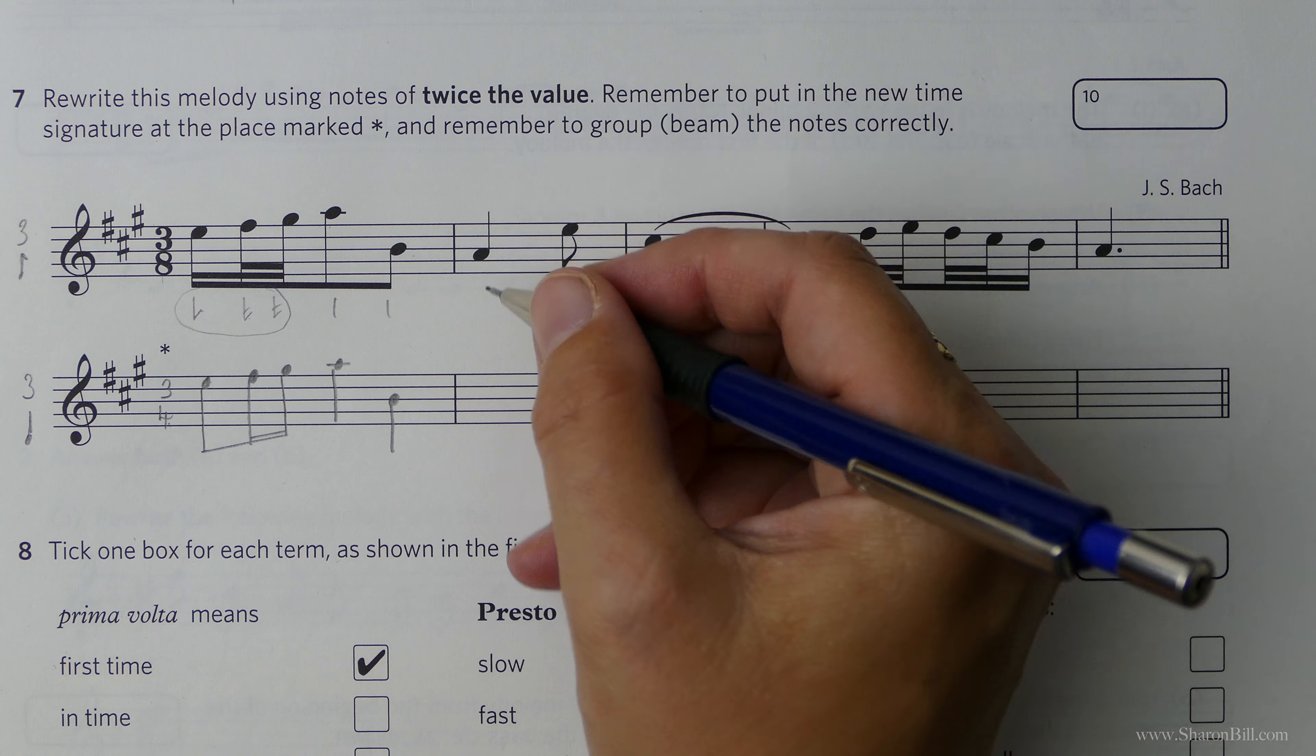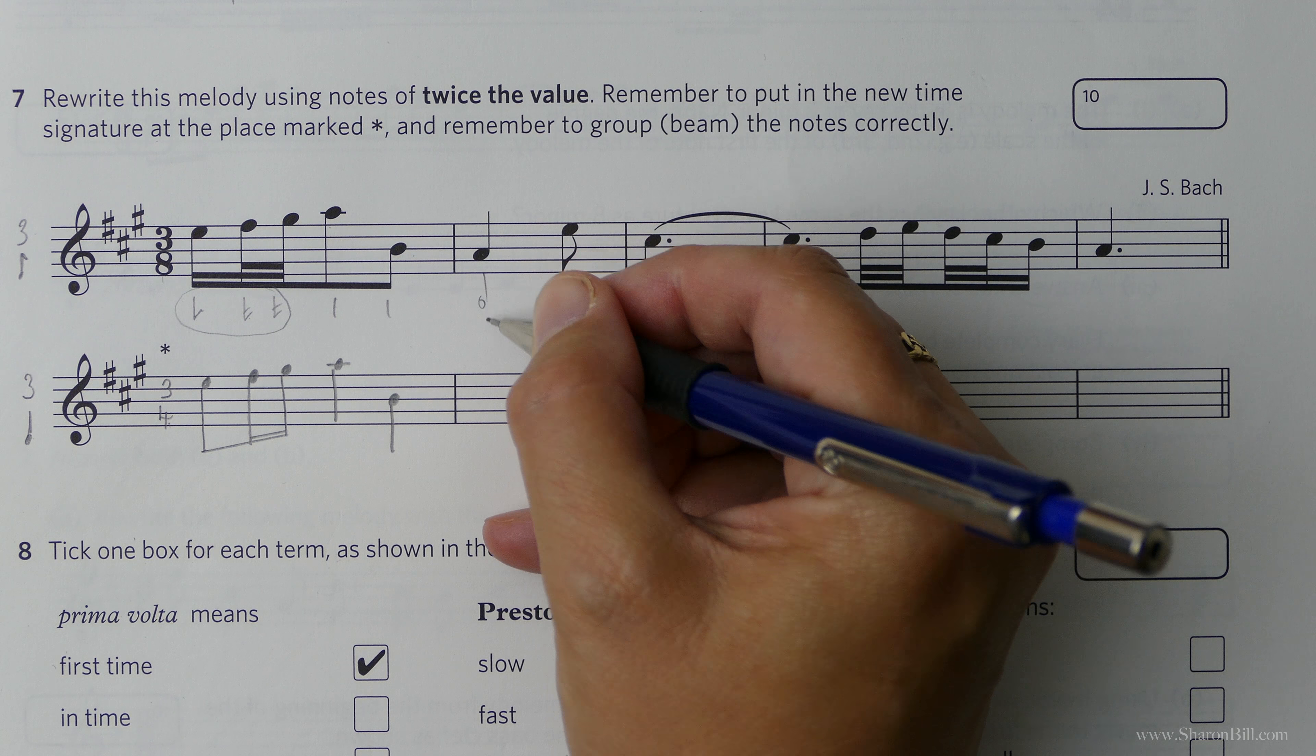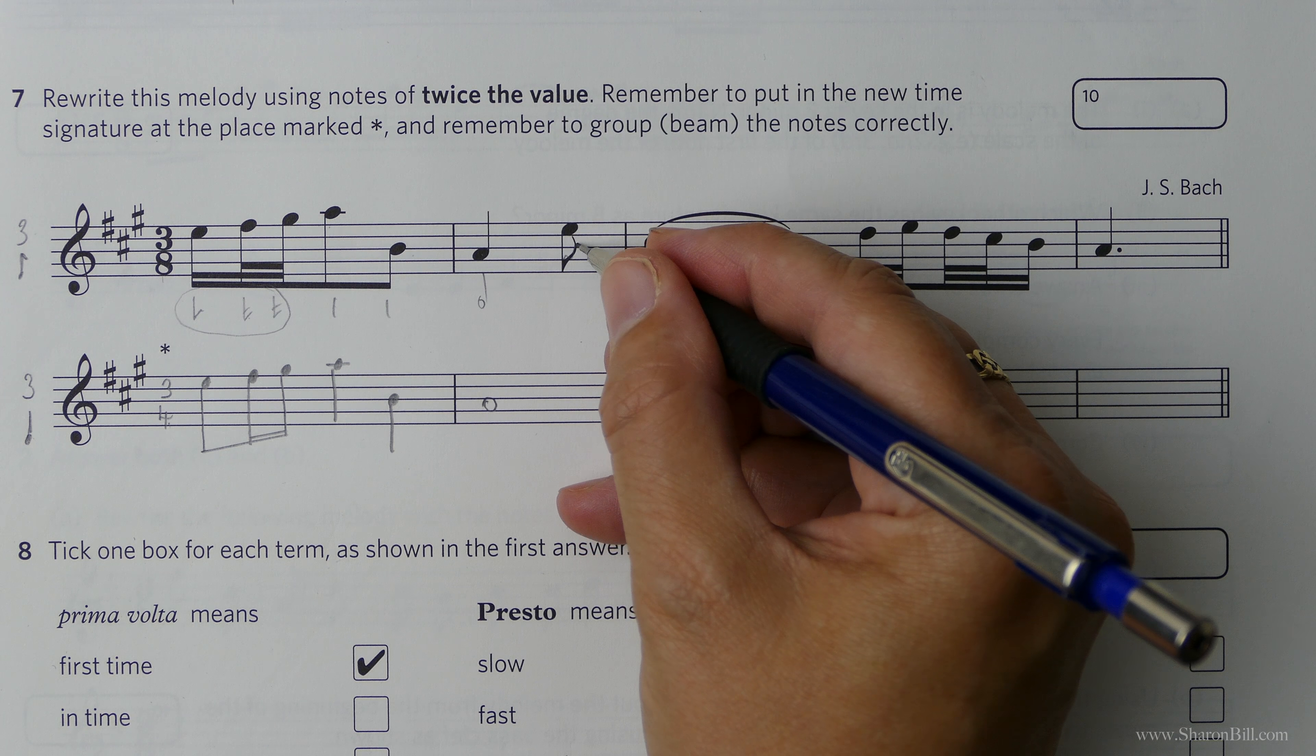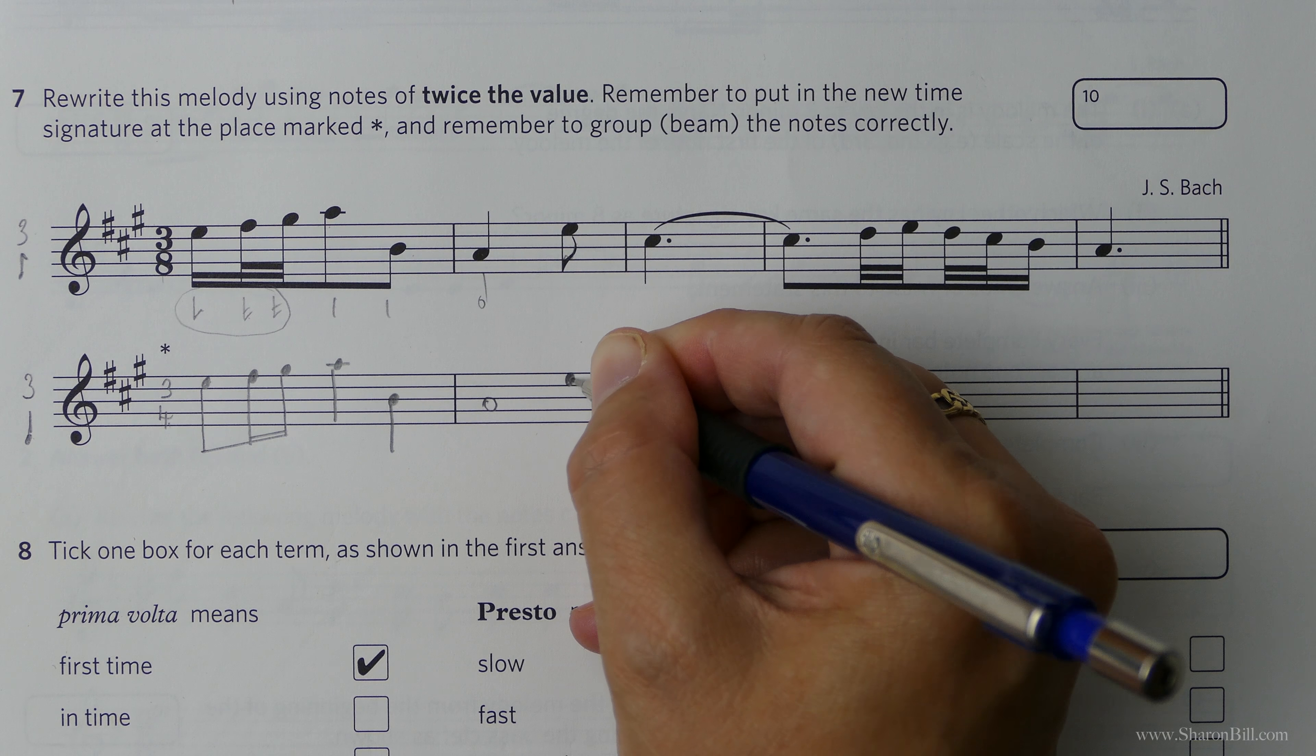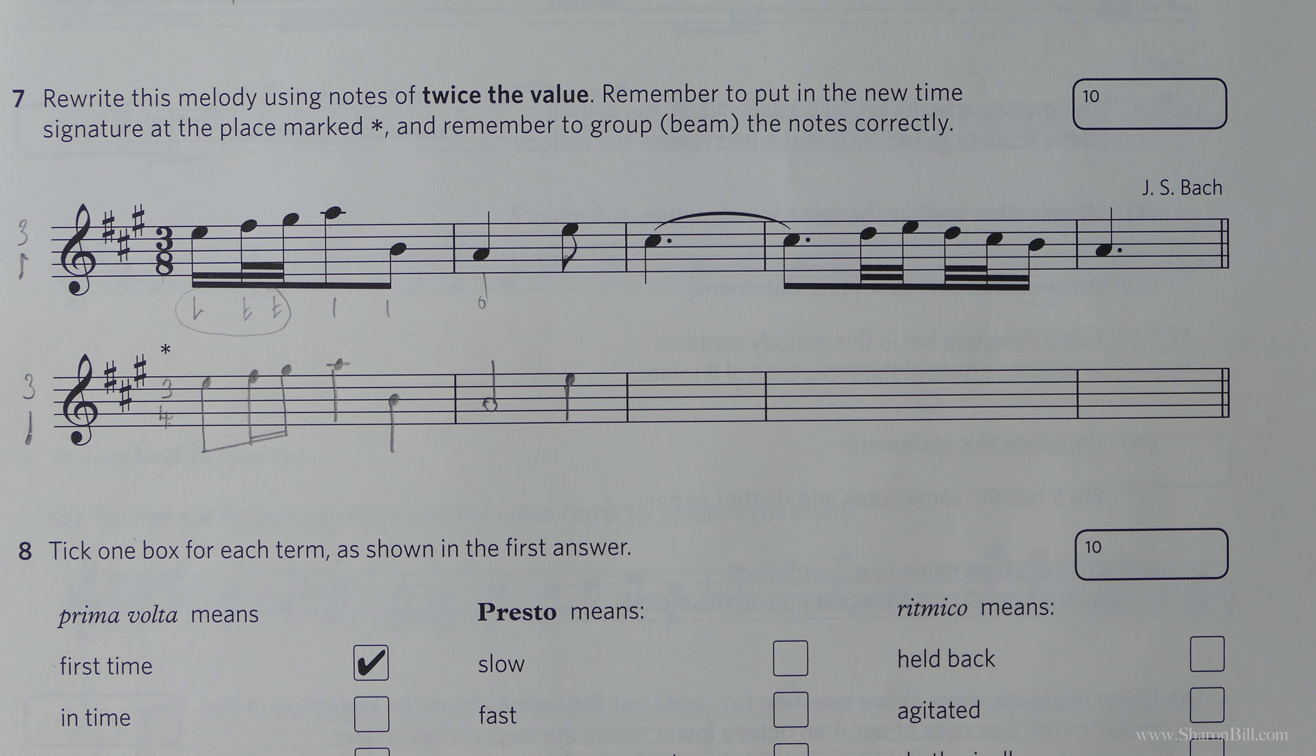That's that bar complete. Now, to double this one, we've gone from a crotchet or a quarter note to a minim half note. And then this one, we'll just lose the tail as that goes from a quaver, an eighth note, to a crotchet, a quarter note. So we just need to pop the stems on those, but nothing else.